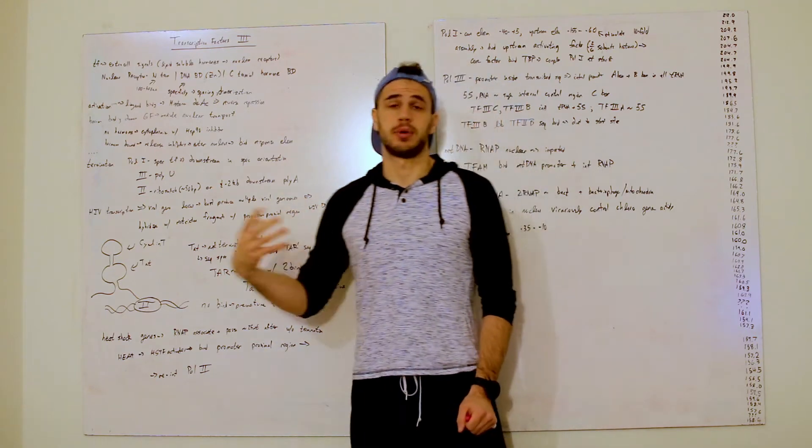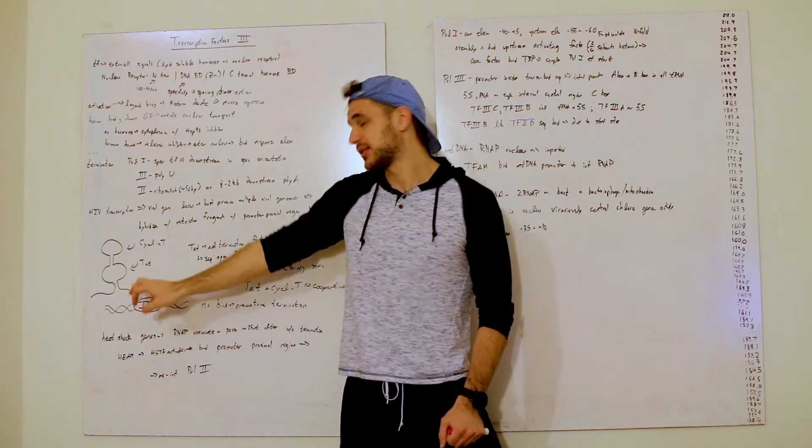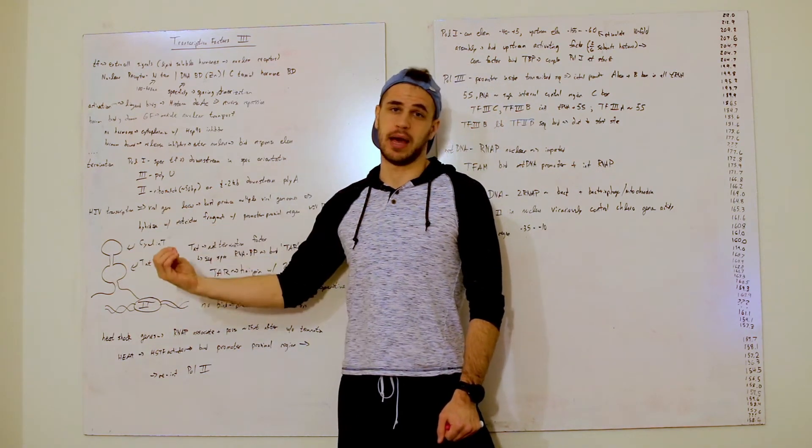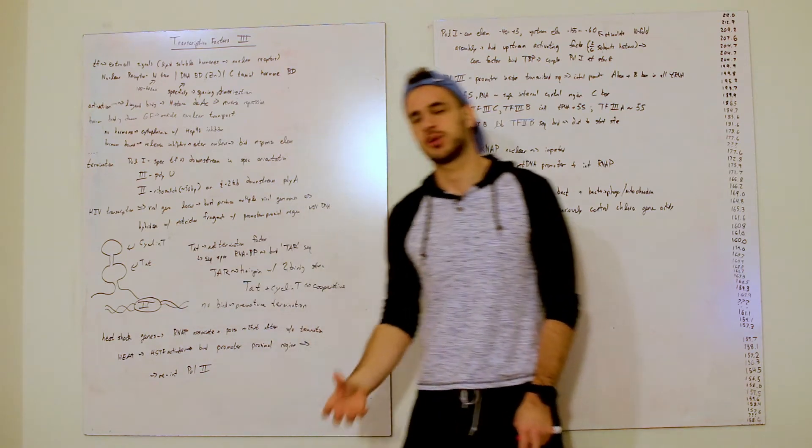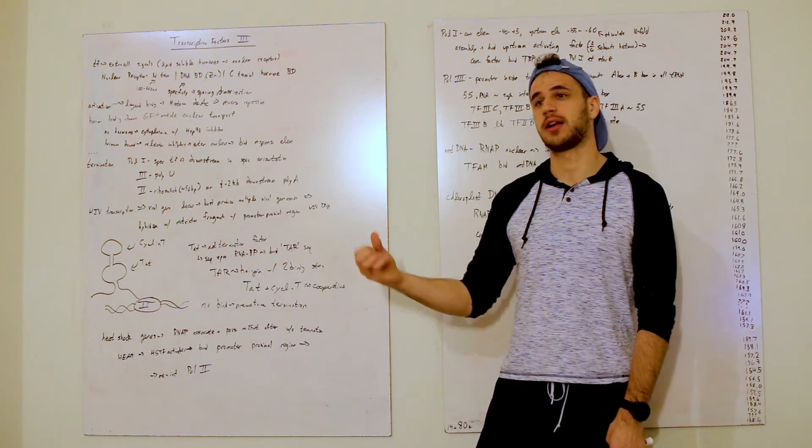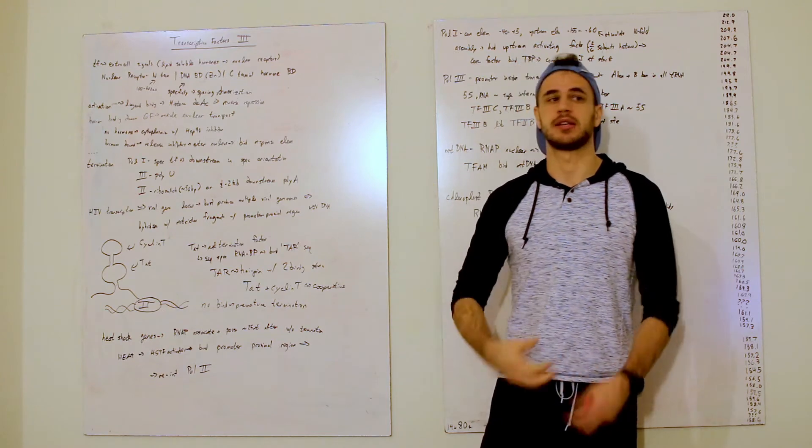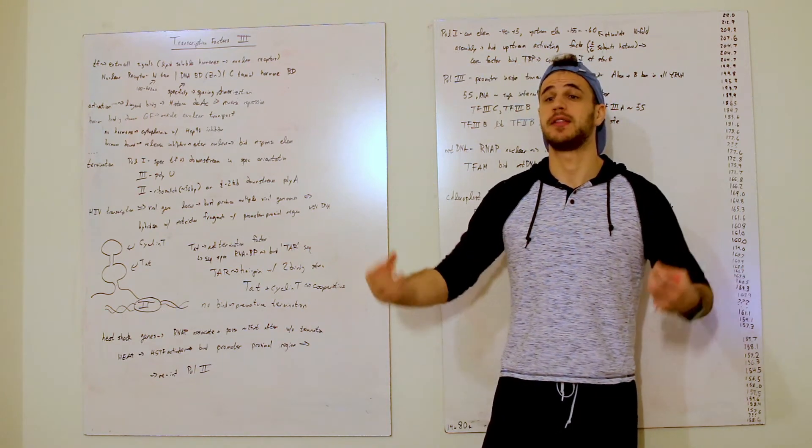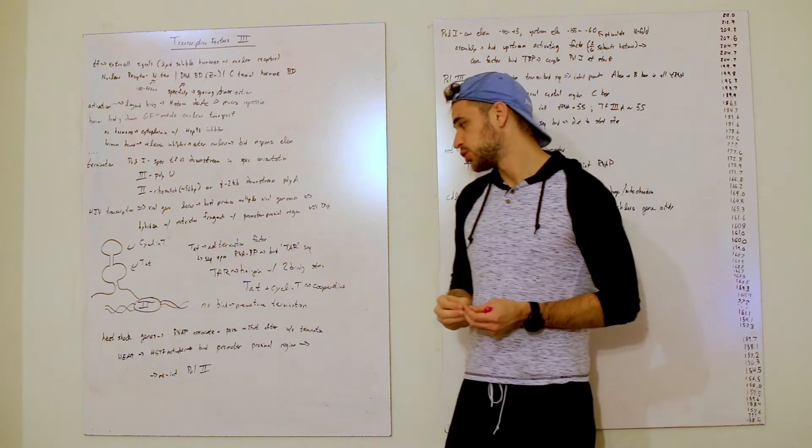So, what does cooperatively mean? It means that once TAT binds, cyclin-T is more likely to bind, and if cyclin-T binds, then TAT is more likely to bind. So, it's a lot harder to find just one bound than both bound, because of the energetic favorability of these processes together.